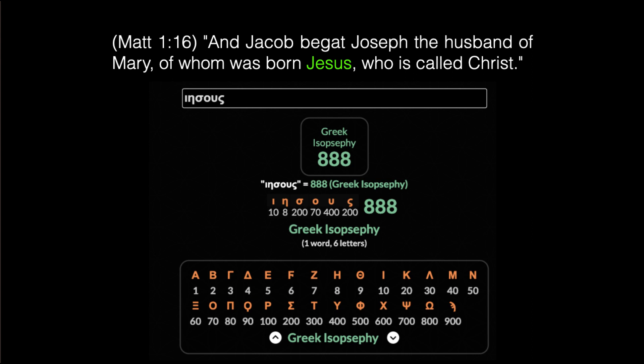The name Jesus as found in Matthew 1:16 has a value of 888 using Greek isopsophy — the cipher you see here. This is the same cipher used to obtain the number 666 in Revelation 13:18 of the Greek text.